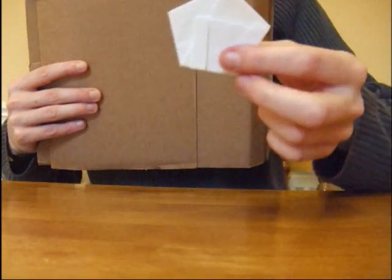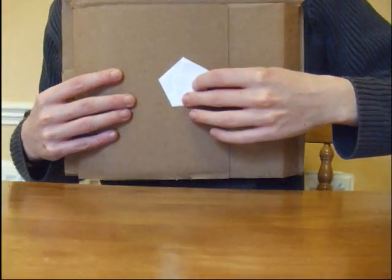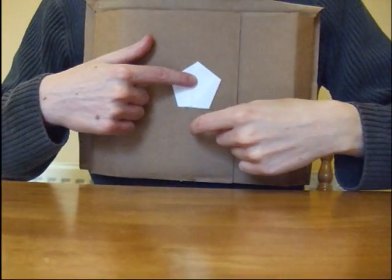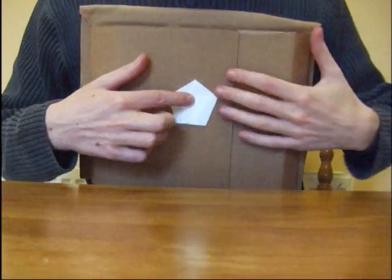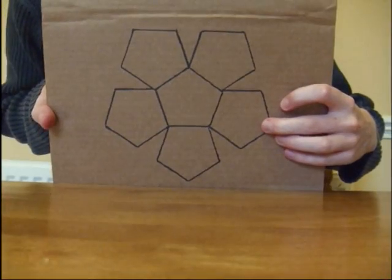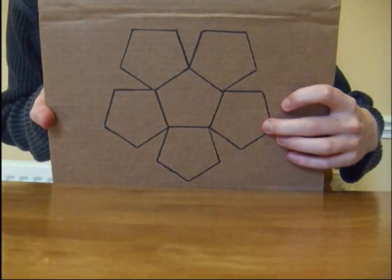So take your card and your pentagon and trace the pentagon onto the card and trace another pentagon adjacent to each side. So it looks something like this. You'll get six pentagons and it kind of looks like a flower.